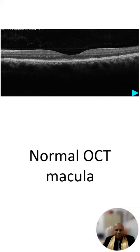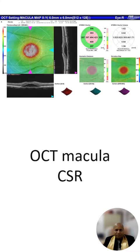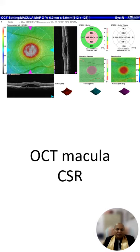This is the OCT of a CSR patient. As we can see, the layers of the retina are separated, and the pseudo color-coded image also shows a thickening between the retinal pigment epithelium and the internal limiting membrane.